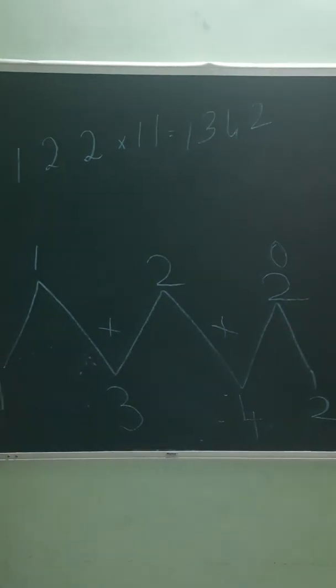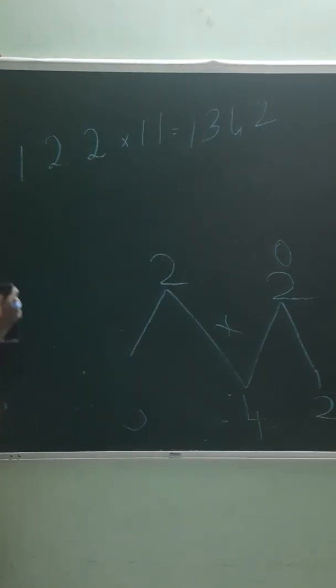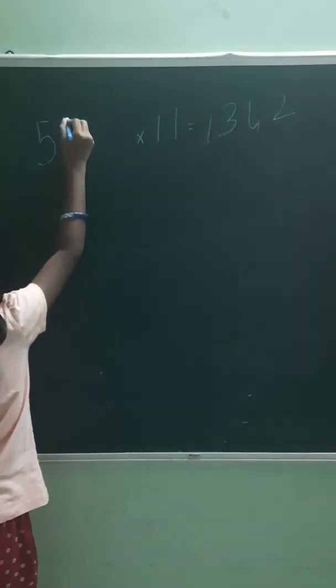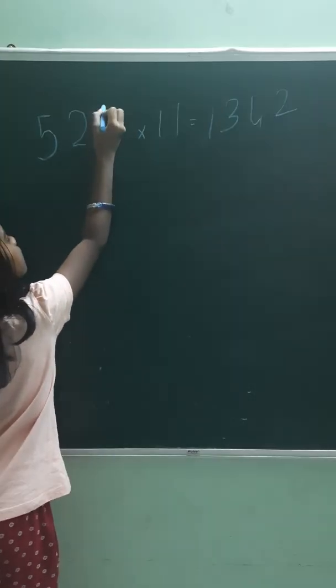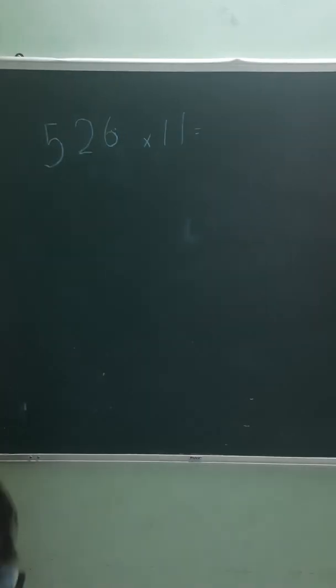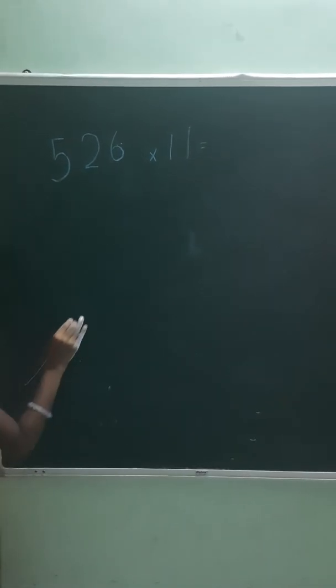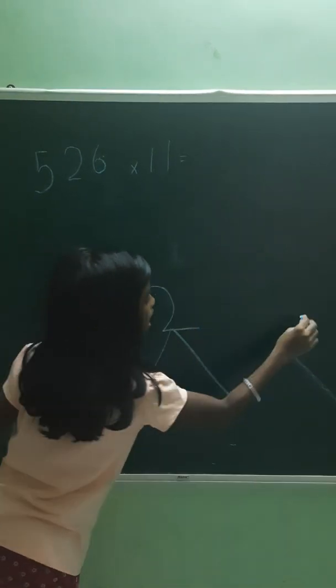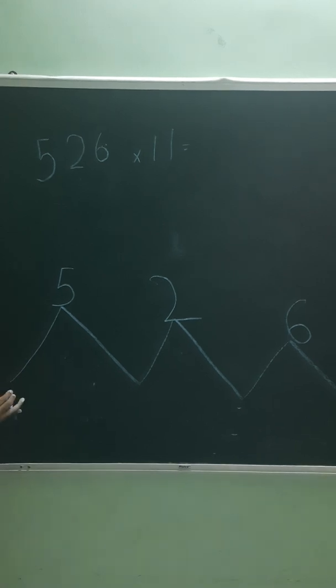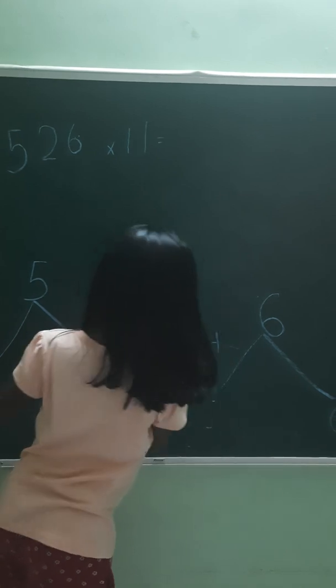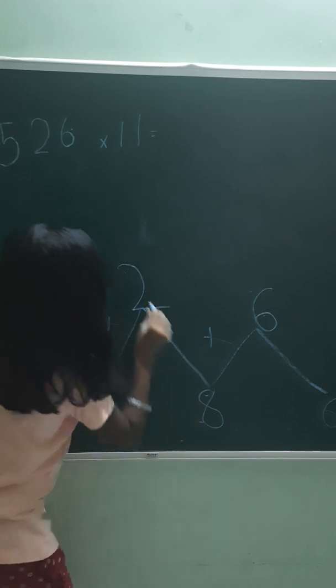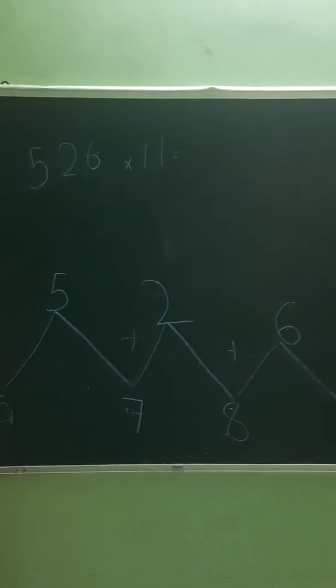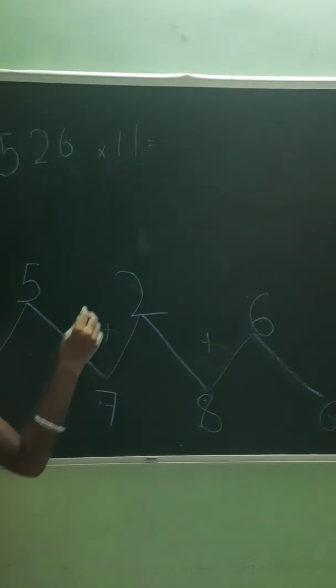This is very simple, right? Now what about another example? I'll give it a little bit like 526 multiplied by 11. Now draw three more mountains. Write here 5, 2, and 6. You want to take your 5 here and write it over here, 6. Now add 6 plus 2 which is 8, and 2 plus 5 which is 7. So the answer is 5,786.